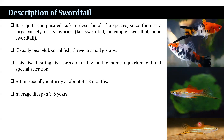These are live-bearing fishes that breed readily in the home aquarium without special attention, if they are well-fed and cared for. In fact, they can quickly overpopulate an aquarium. Little more is required than to introduce both sexes in the aquarium. They usually attain sexual maturity at about 8 to 12 months, and the average lifespan is 3 to 5 years.